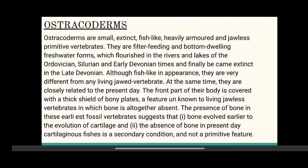Ostracoderms finally became extinct in the late Devonian. Although fish-like in appearance, they are very different from any living jawed vertebrates. They are closely related to present-day forms. The front part of the body is covered with a thick shield of bony plates, a feature unknown in living jawless vertebrates in which bone is altogether absent. The presence of bone in these earliest fossil vertebrates suggests that bone evolved early, prior to cartilage, and that the absence of bone in present-day cartilaginous fishes is a secondary condition and not a primitive feature.